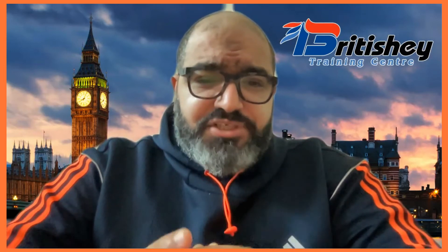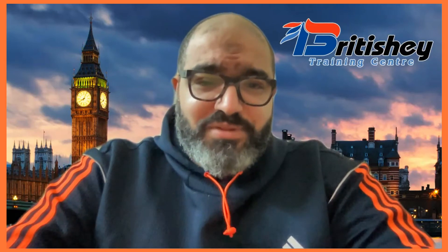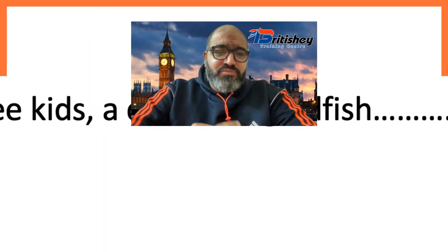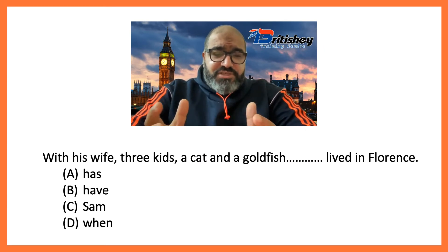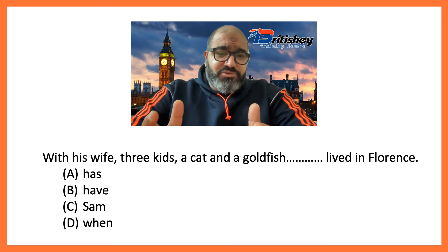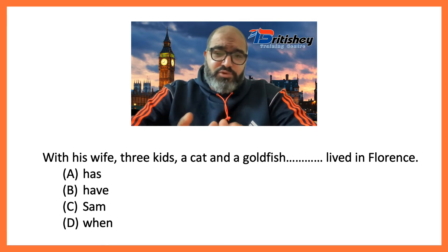Let's see how questions on Objects of Prepositions would appear in the exam. We've got here question number one. It's an MCQ — a multiple choice question. It says: 'With his wife, three kids, a cat and a goldfish lived in Florence.'